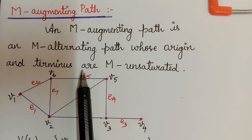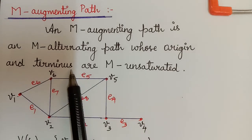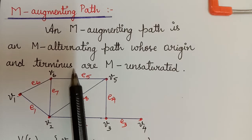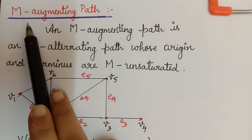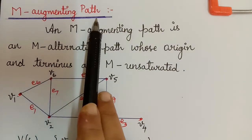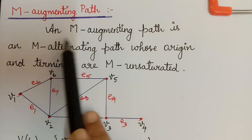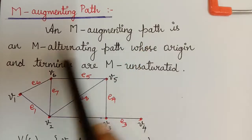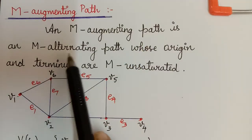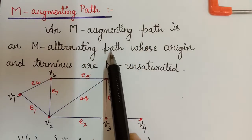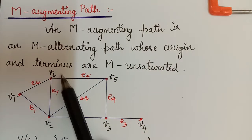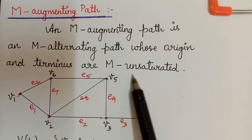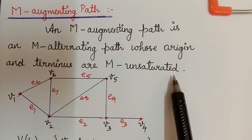Hello students. Having seen the definition of M alternating path, we shall now learn about M augmenting path. An M augmenting path is an M alternating path whose origin and terminus are M unsaturated.